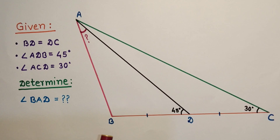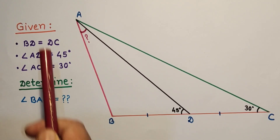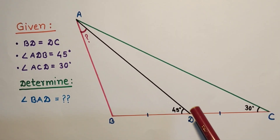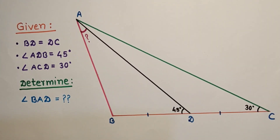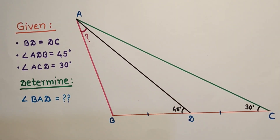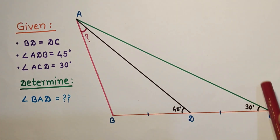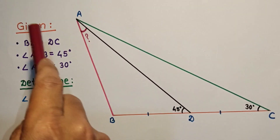We will discuss two methods to solve this question. The first method is to drop a perpendicular from point B to AC, then from point D draw a line parallel to the already drawn line segment, and use the 60-30 degree angle properties. The second method is to take D as the center of a circle with DB as the radius and construct a semicircle.